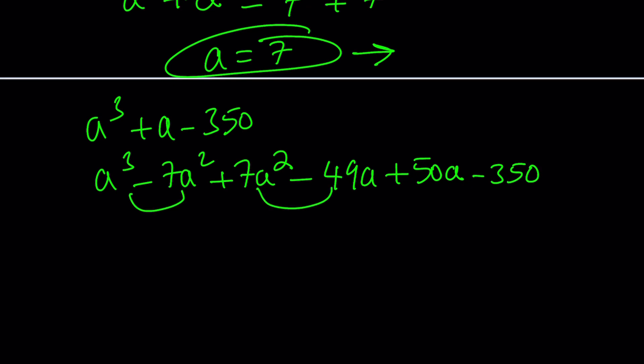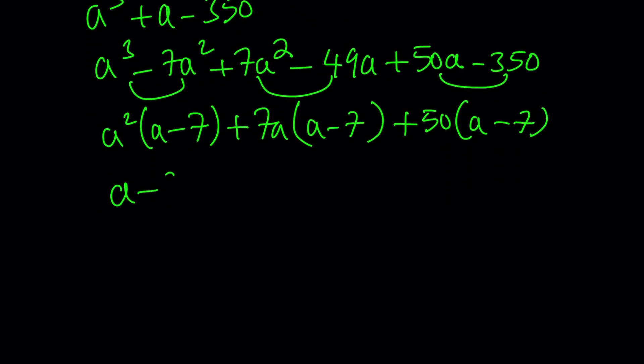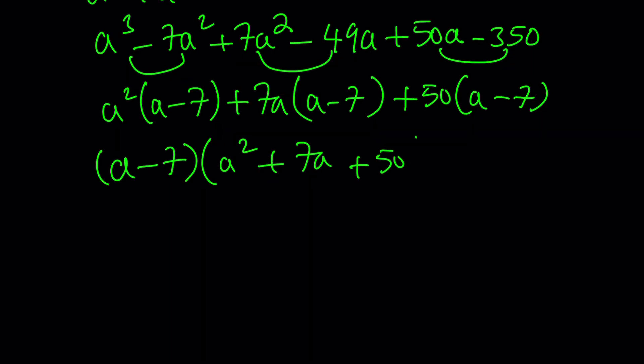Now, if you factor this by grouping, you'll realize that a - 7 is always a factor. We knew that because a = 7 is a solution. But this verifies it once more. Now you can factor out a - 7.